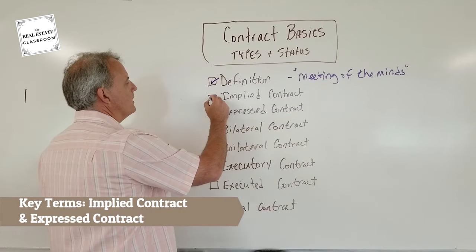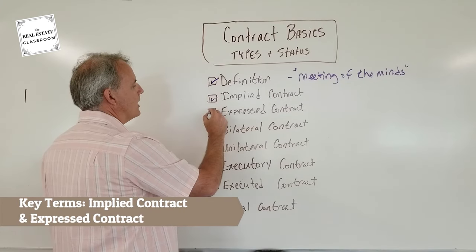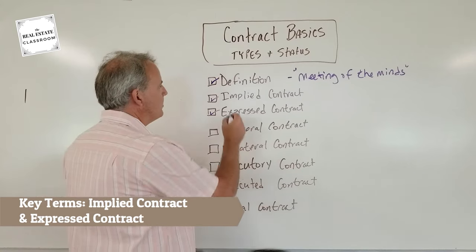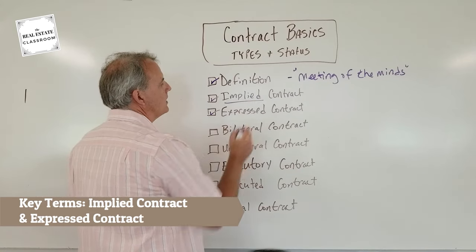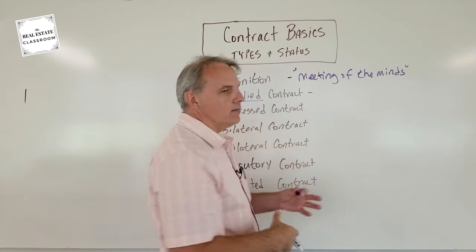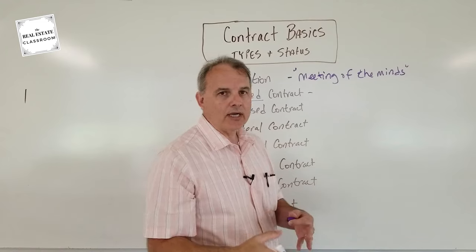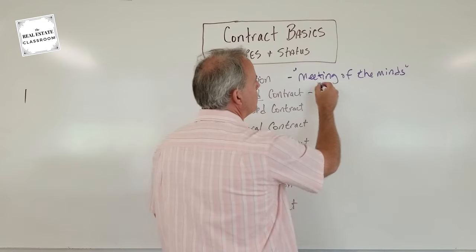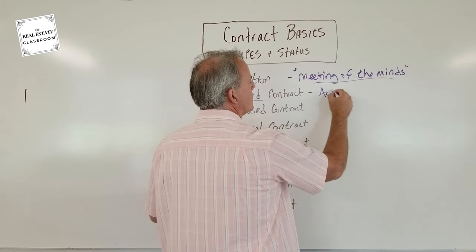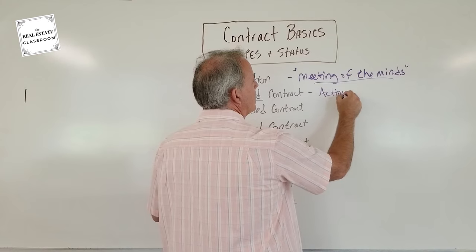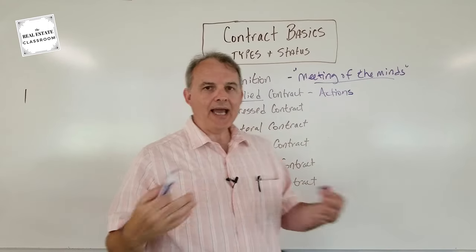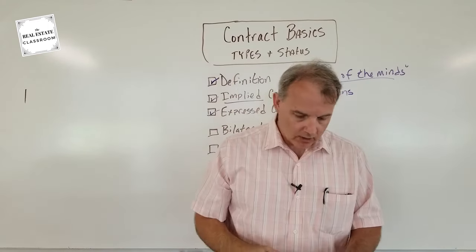There are two more terms you have to know: implied contract and express contract. An implied contract simply means that the terms of the contract, or the meeting of the minds, have occurred through actions — not verbally or in writing. It was the act of the parties.